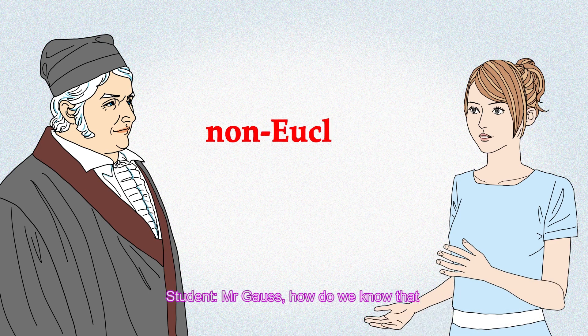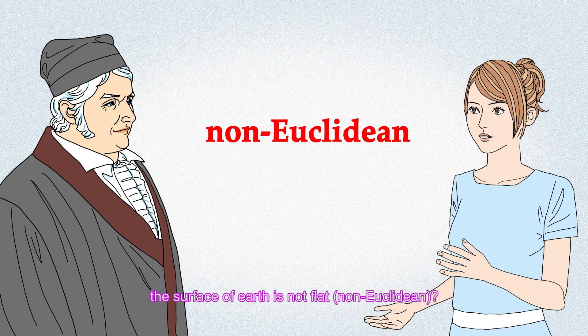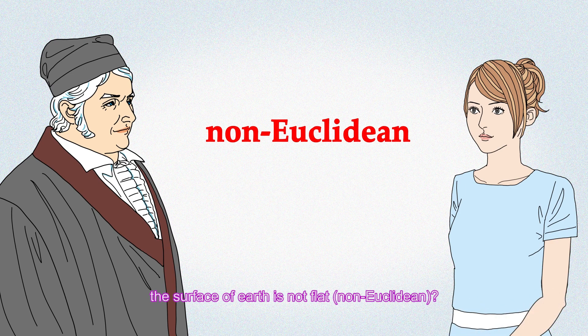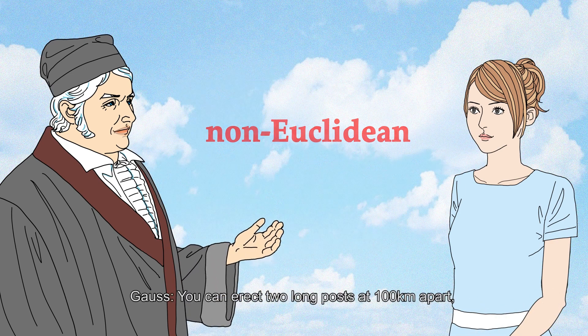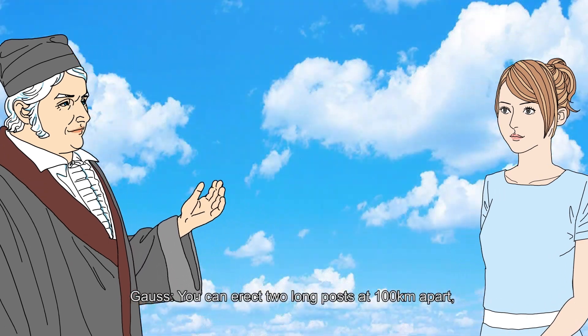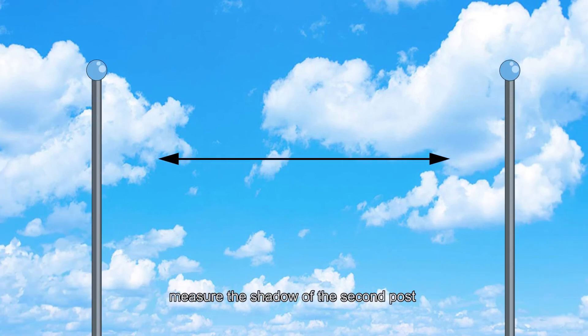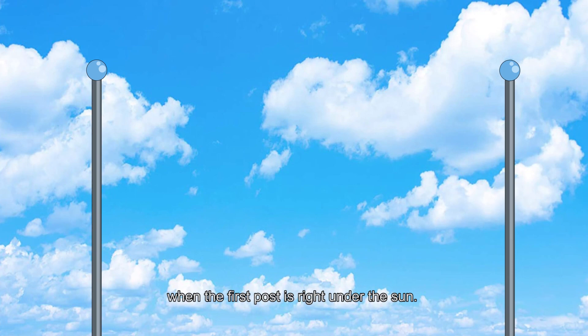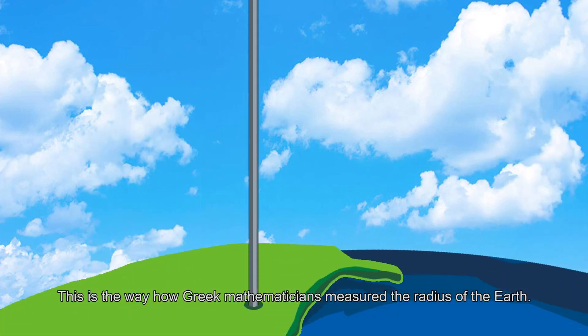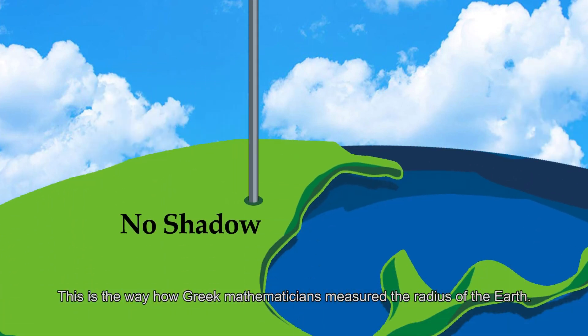Mr. Gauss, how do we know that the surface of Earth is not flat, nor Euclidean? You can erect two long posts at 100 kilometers apart, measure the shadow of the second post when the first post is right under the sun. This is the way how Greek mathematicians measured the radius of the Earth.